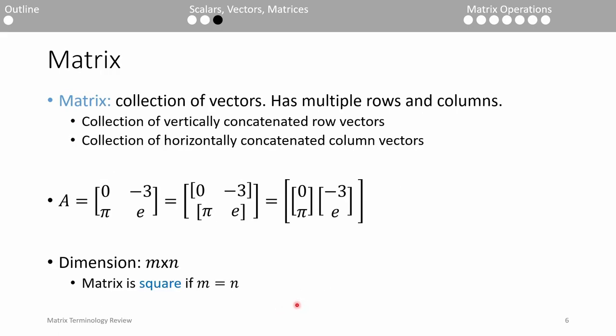Just as a vector is a collection of scalars, a matrix is a collection of vectors. The primary difference between a vector and a matrix is that a matrix has multiple rows and columns, whereas a vector either has one row or one column.